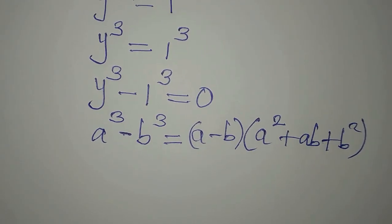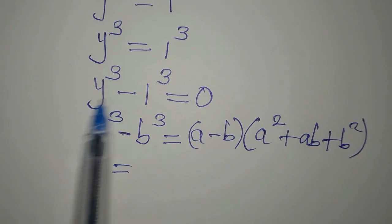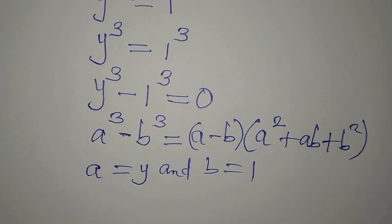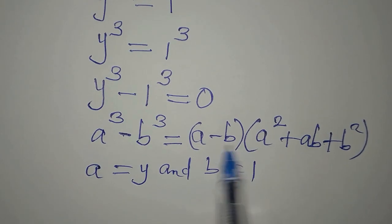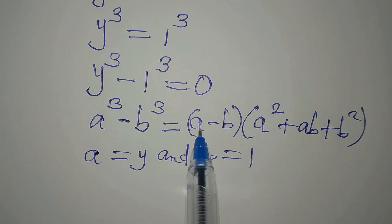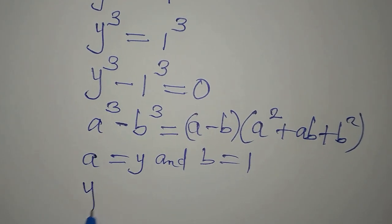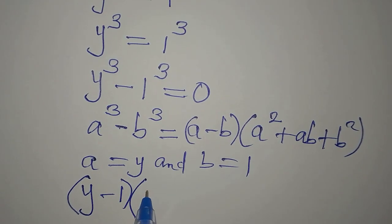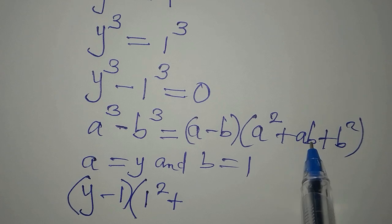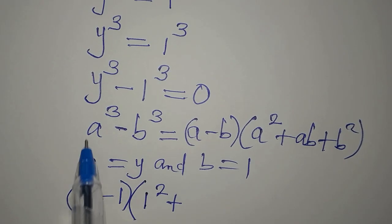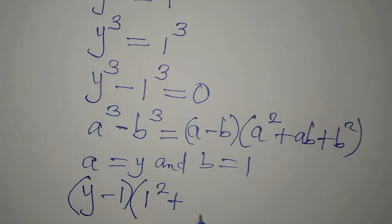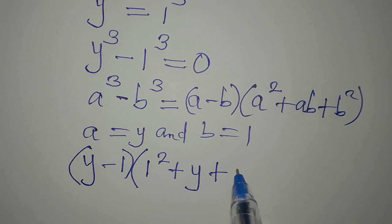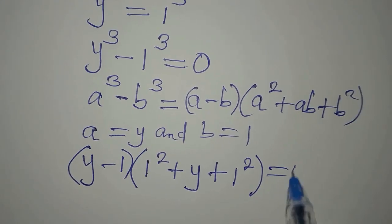Our a is going to be y and our b is 1, so we put this into the standard form. So a minus b will be y minus 1, then a squared will be y squared, plus ab is y times 1 which is 1y, then plus b squared which is 1 squared. Everything is equal to zero.